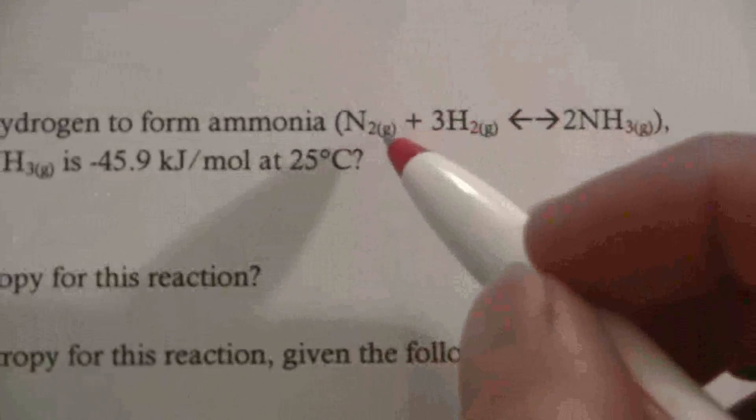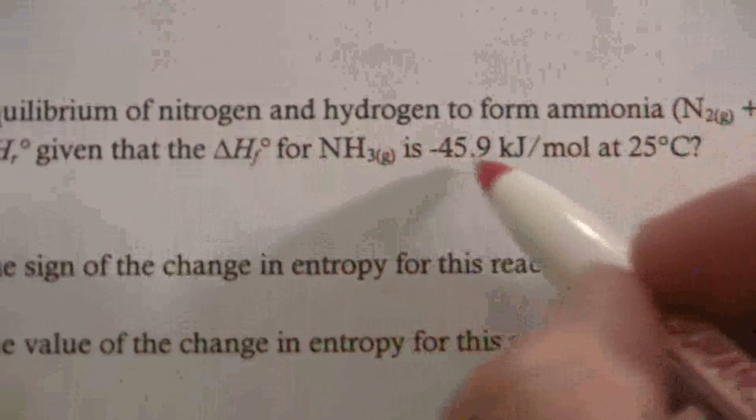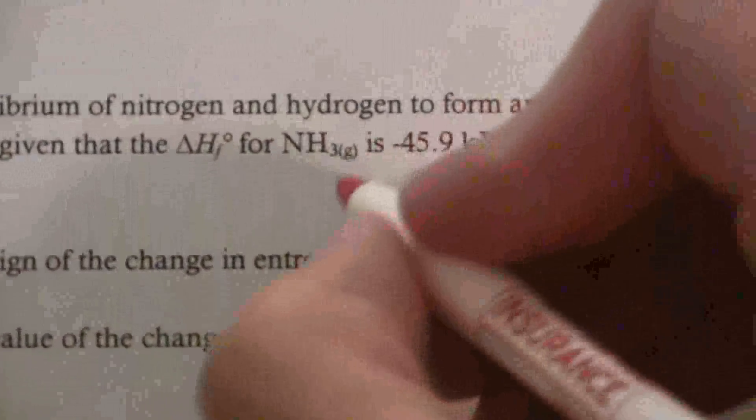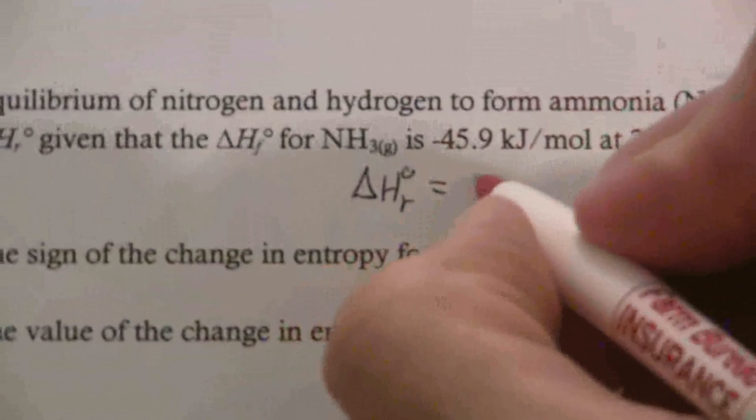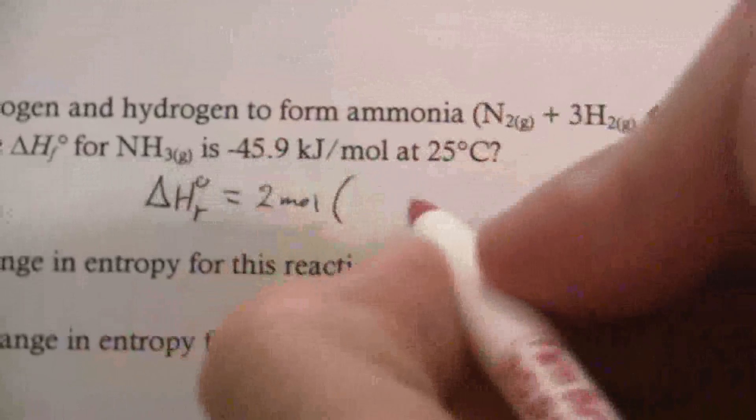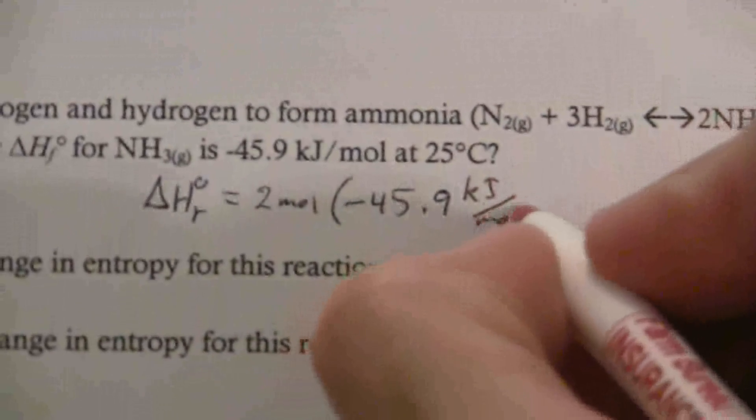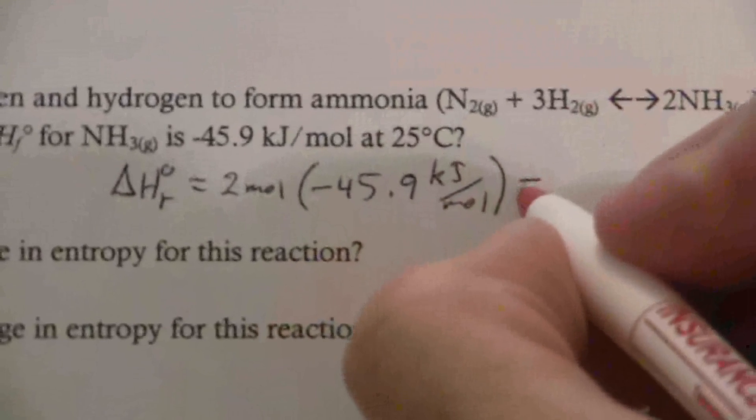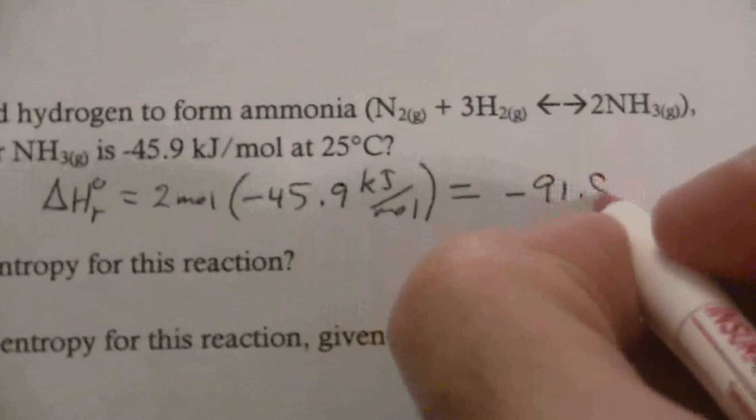So really, our products minus reactants becomes just the products because our reactants will be zero. So the delta H for ammonia is negative 45.9, so the delta H for the reaction is going to be the products, but that is 2 moles times that, so 2 moles times negative 45.9 kilojoules per mole.